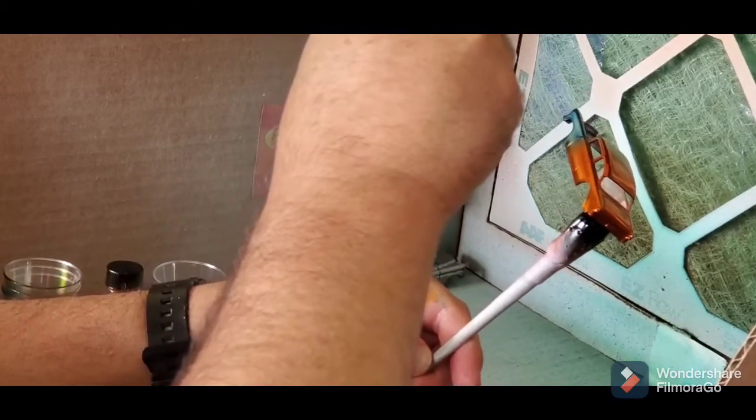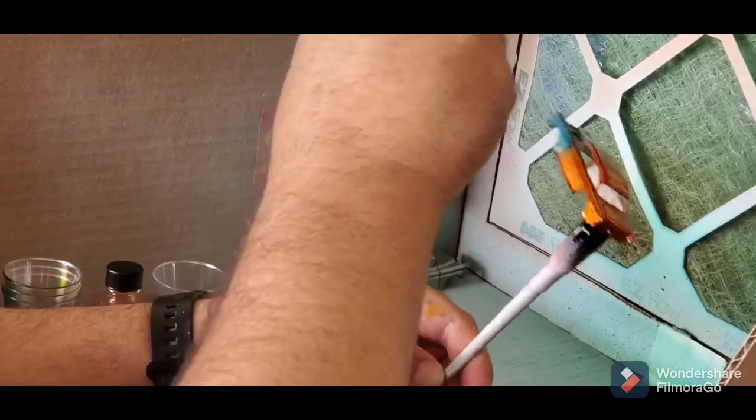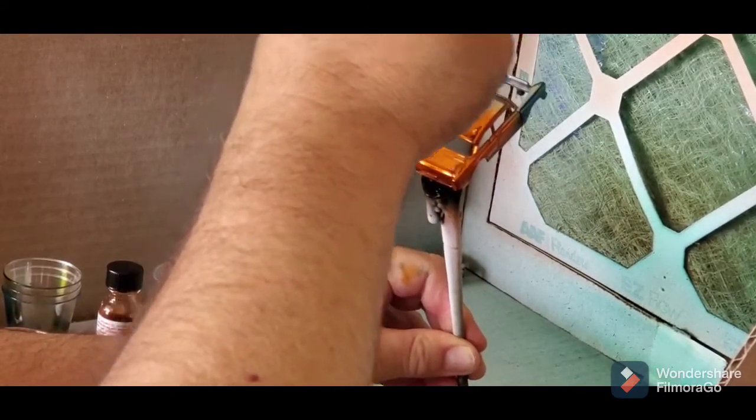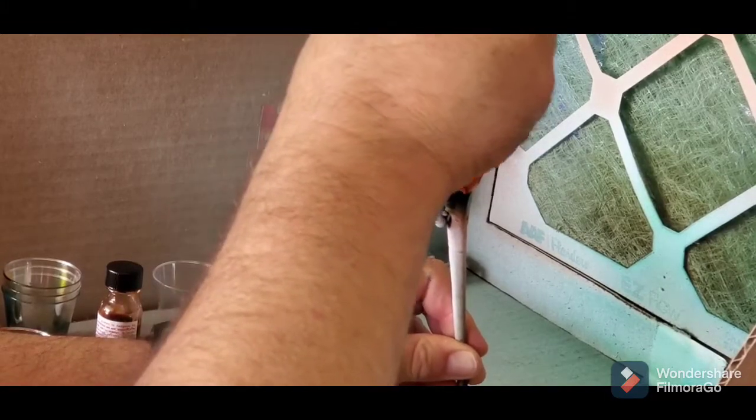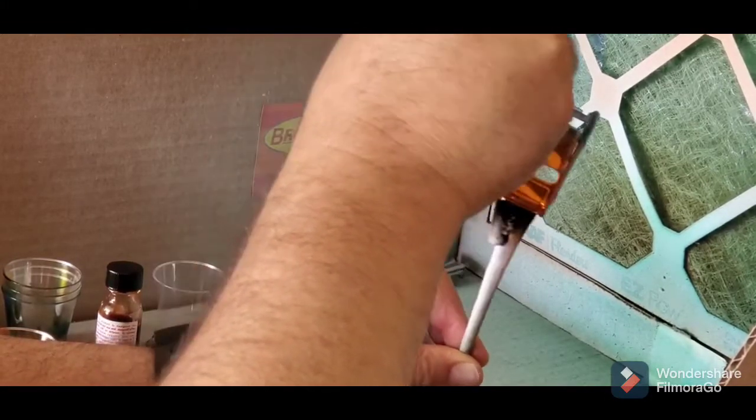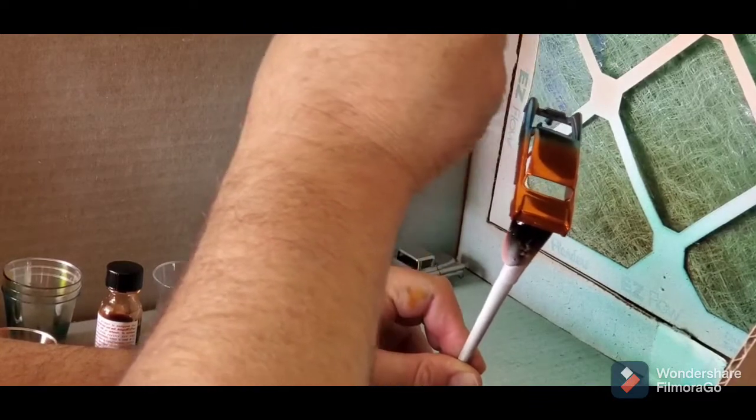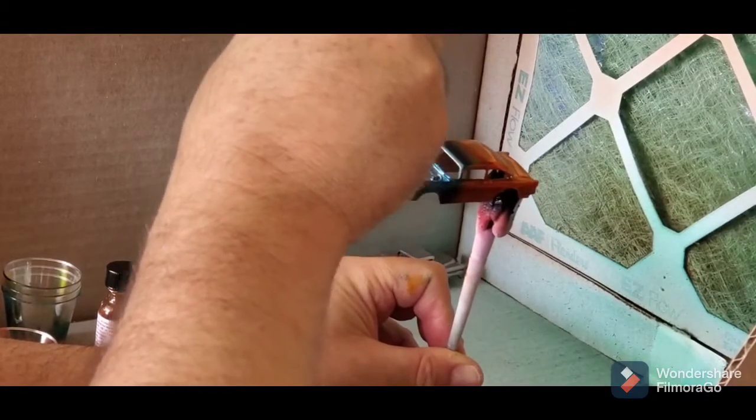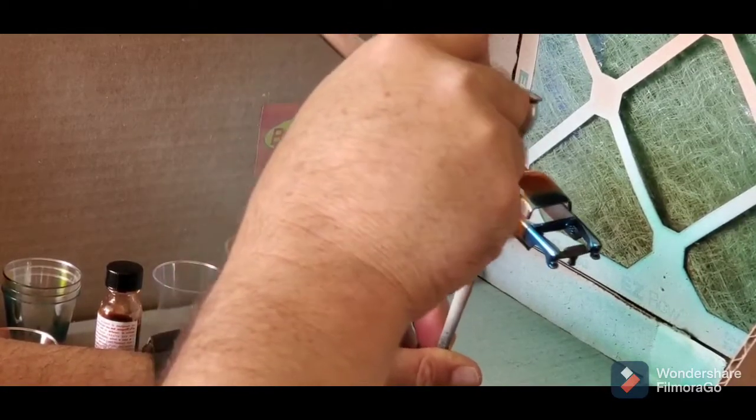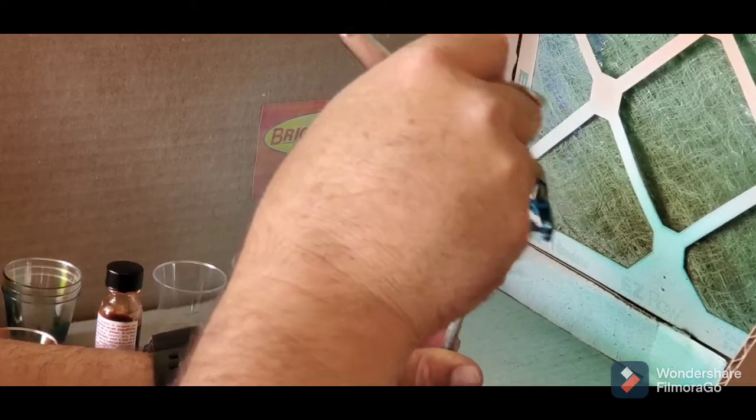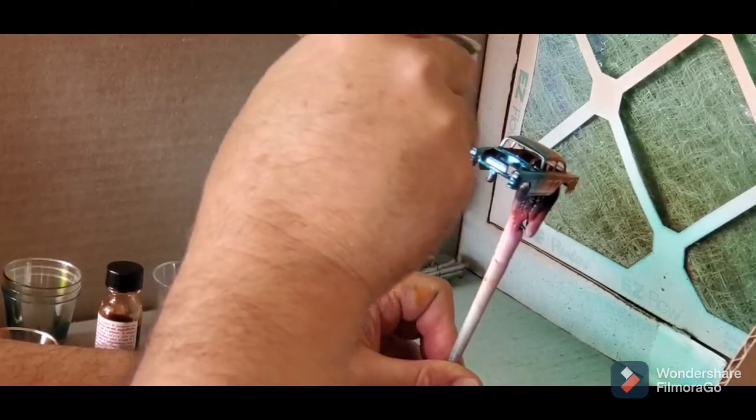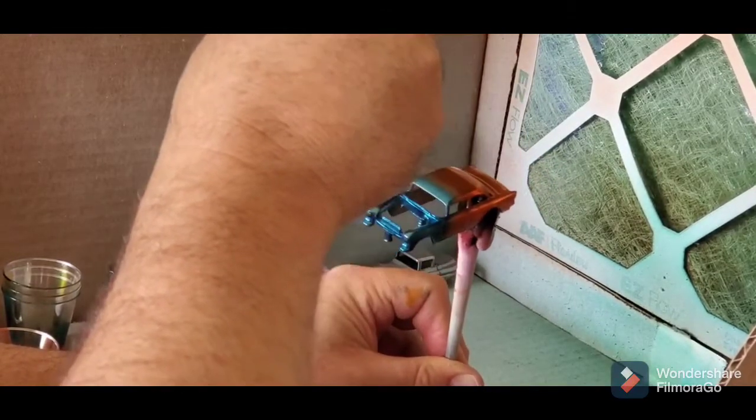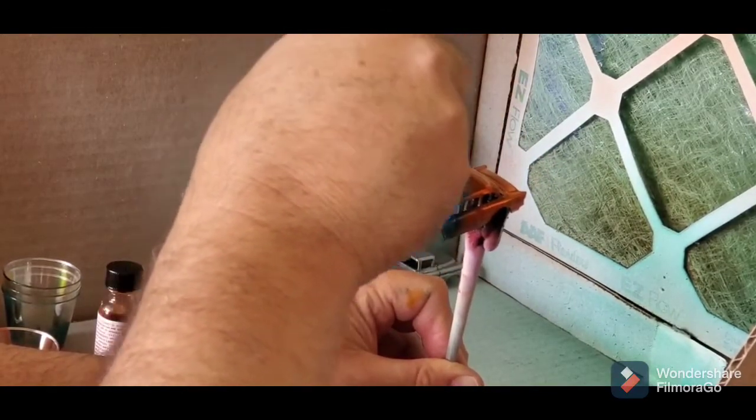Because once you get the right tone for the chrome part, you're going to shoot that fade into the orange part. And that's why it's called a fade. You don't want to stop it right at the breaking point of the orange and the chrome. You got to blend it into the orange or whatever color you're using. So it just turns out really good.